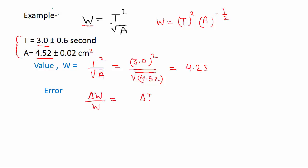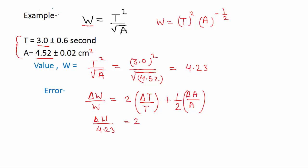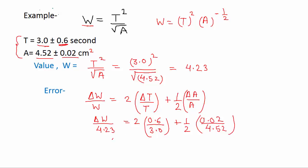Now let's find the error in w. Using the formula: delta w over w equals 2 times delta t over t plus one-half times delta a over a. Plugging in values: w is 4.23, delta t is 0.6, t is 3.0, delta a is 0.02, and a is 4.52. Solving this gives delta w equals 1.701. So we can write the answer as w plus-minus delta w equals 4.23 plus-minus 1.701.